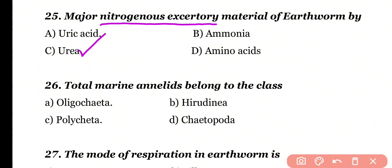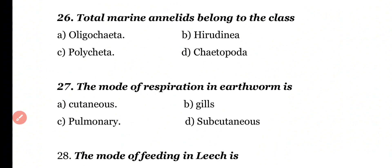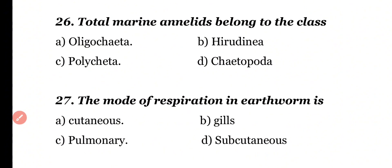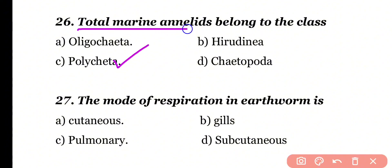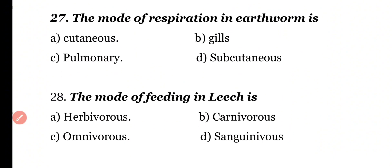Question number 26. Total marine annelids belong to class: Oligochaeta, Hirudinea, Polychaeta, or Chaetopoda. Correct answer is option C. Polychaeta class contains totally marine annelids.